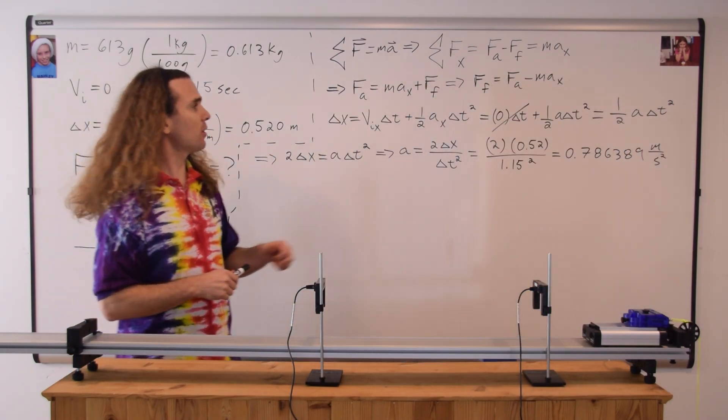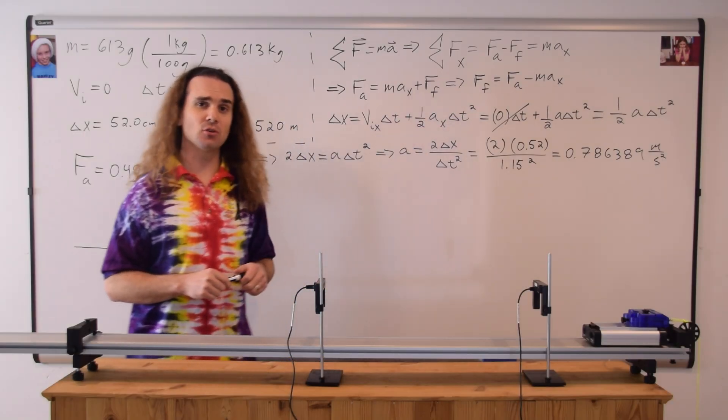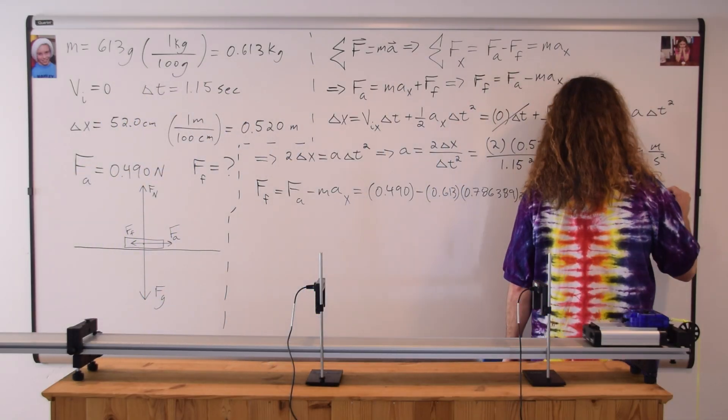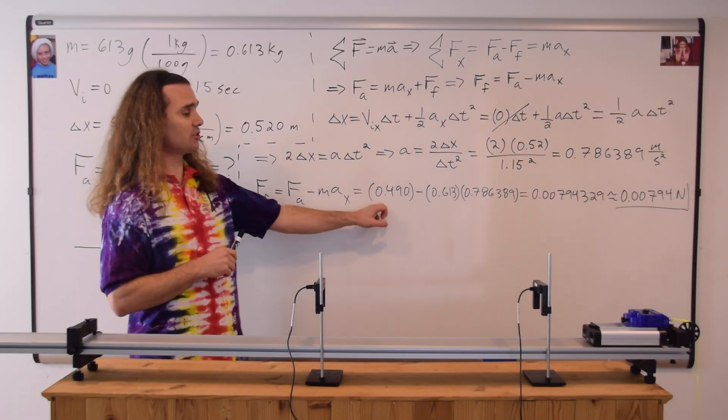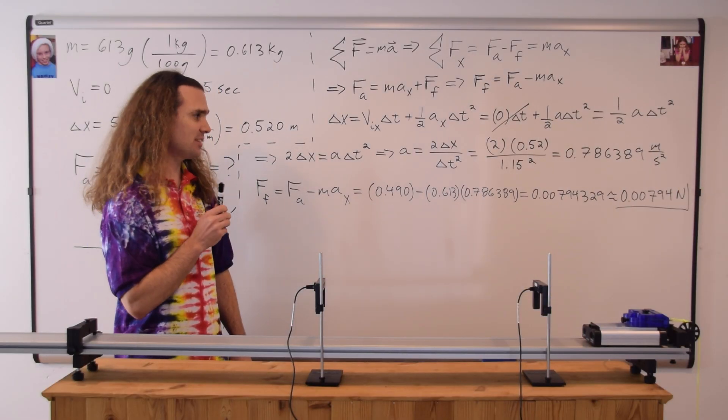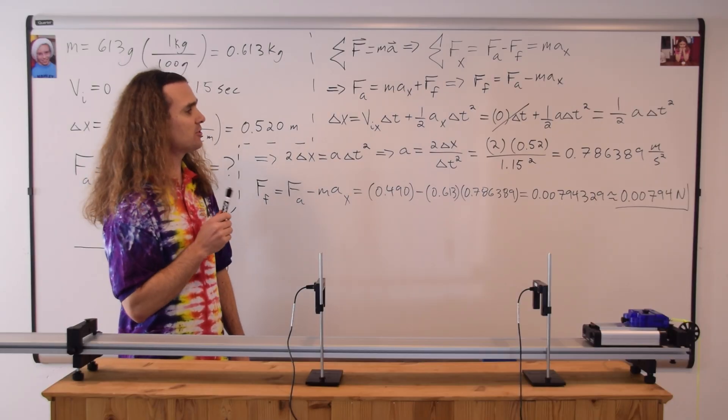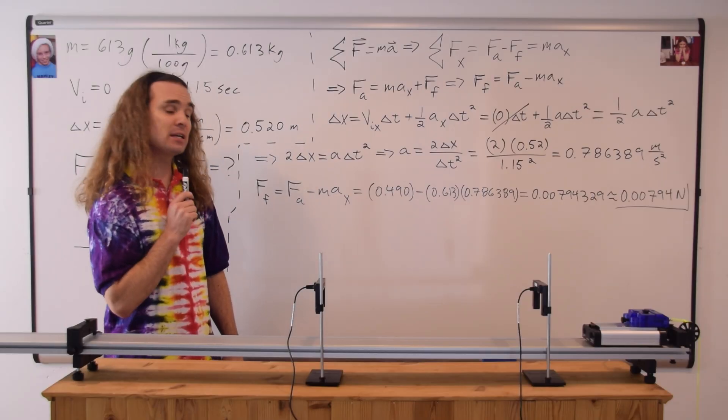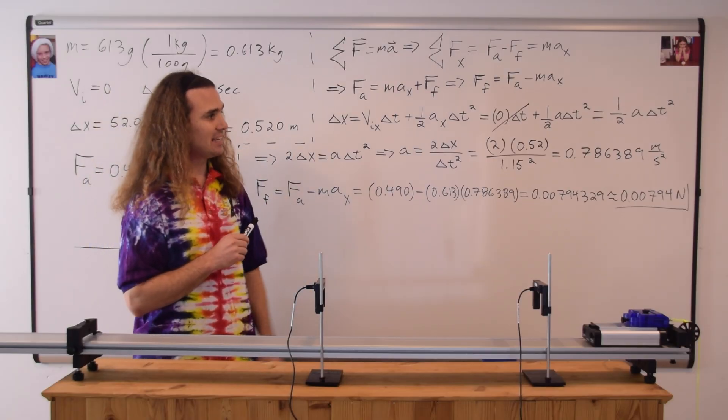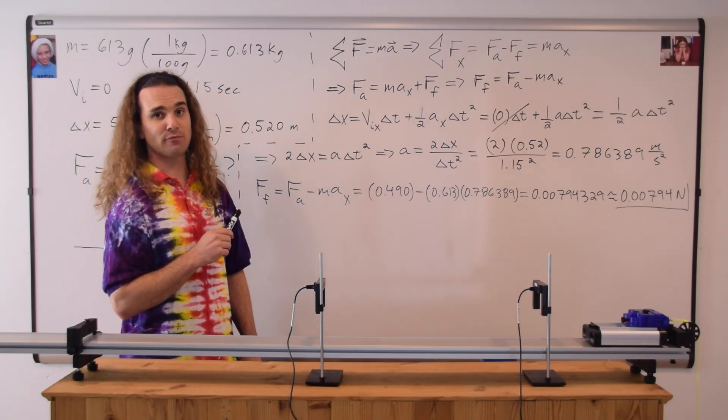And now we can go back to our equation for the force of friction and substitute in numbers. The force of friction is equal to 0.49 minus 0.613 times 0.786389, which works out to be 0.00794329, or with three sig figs, the force of friction is 0.00794 newtons.